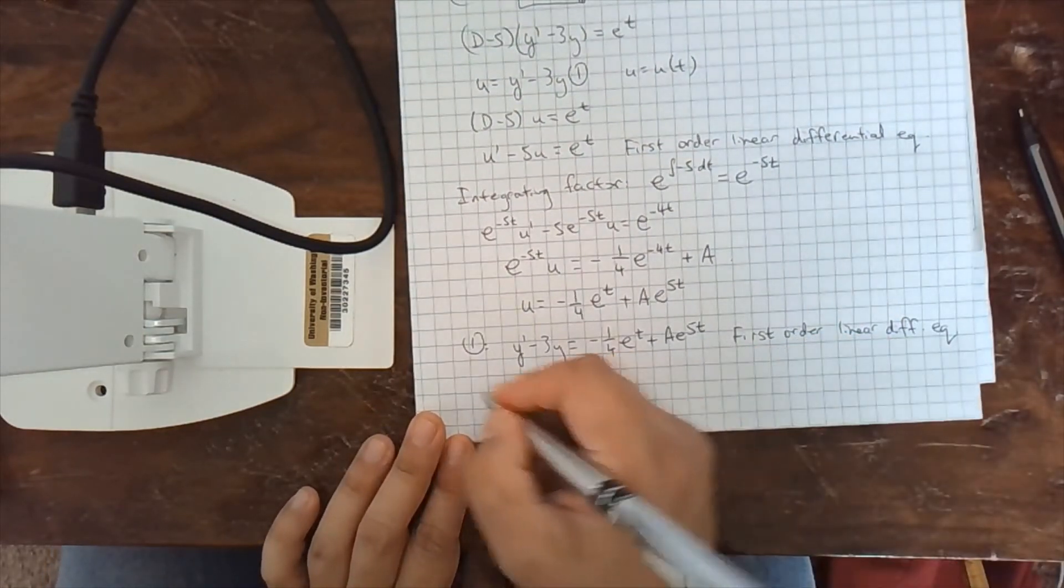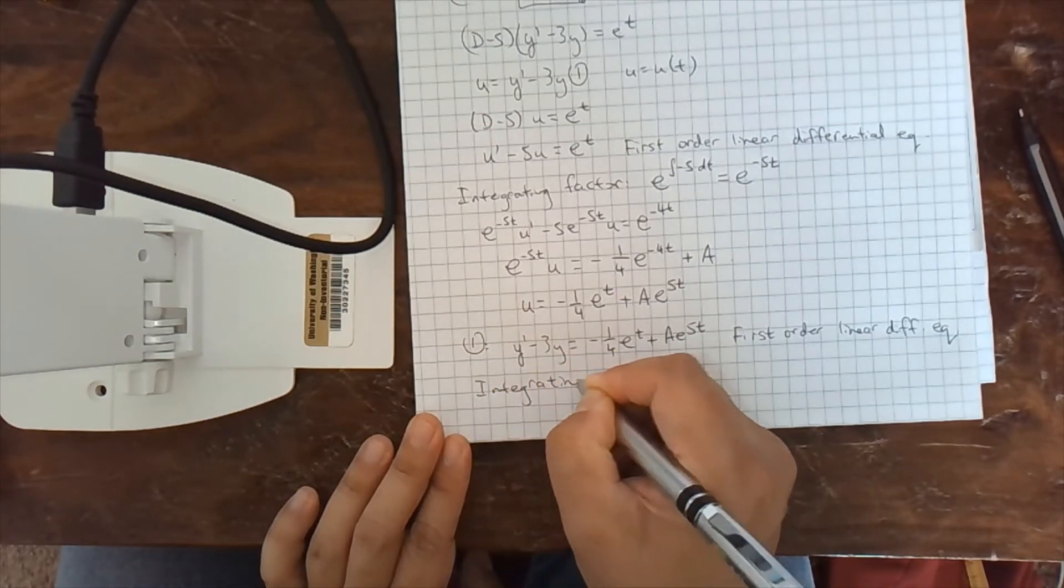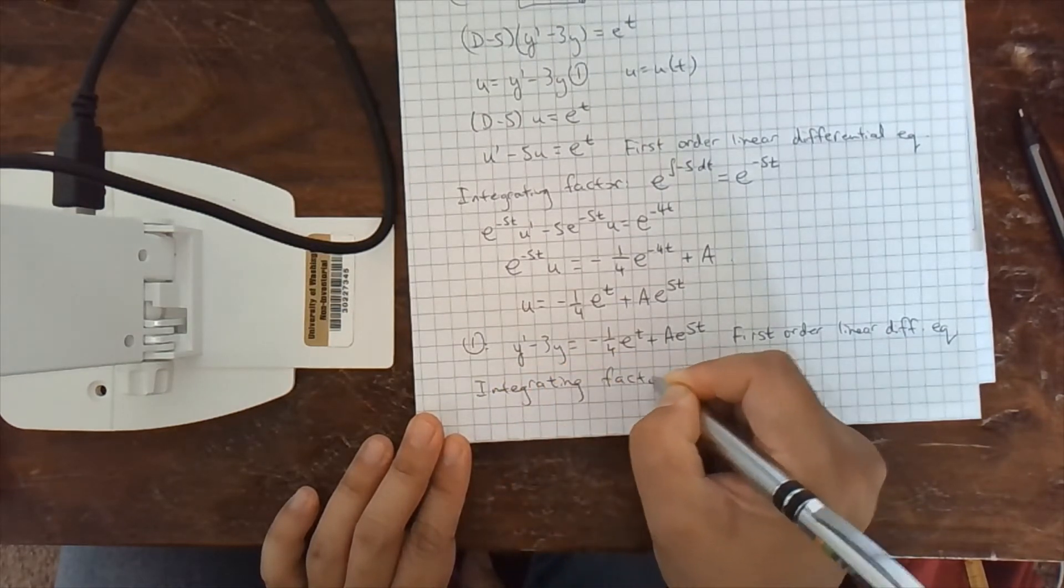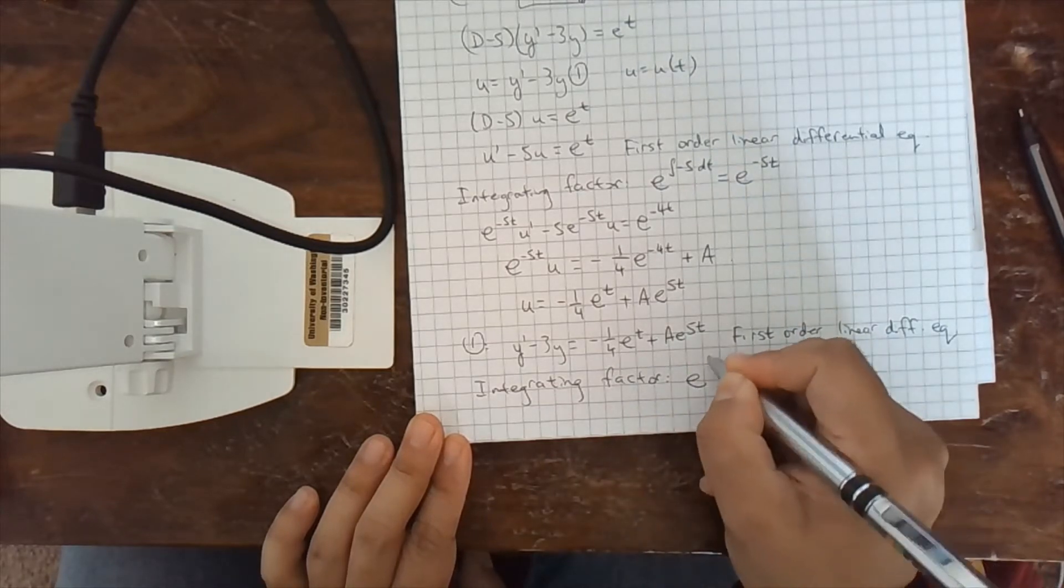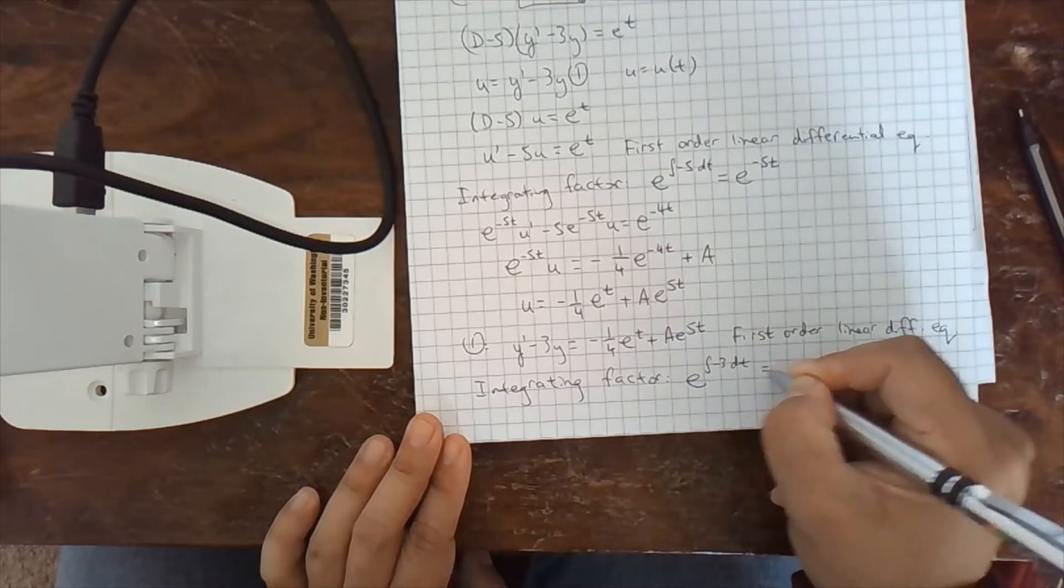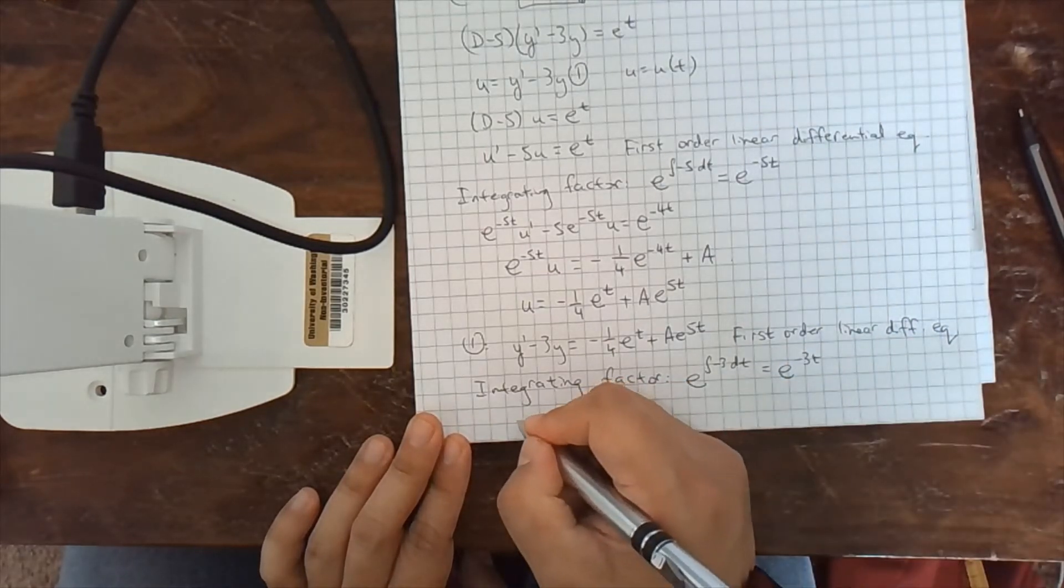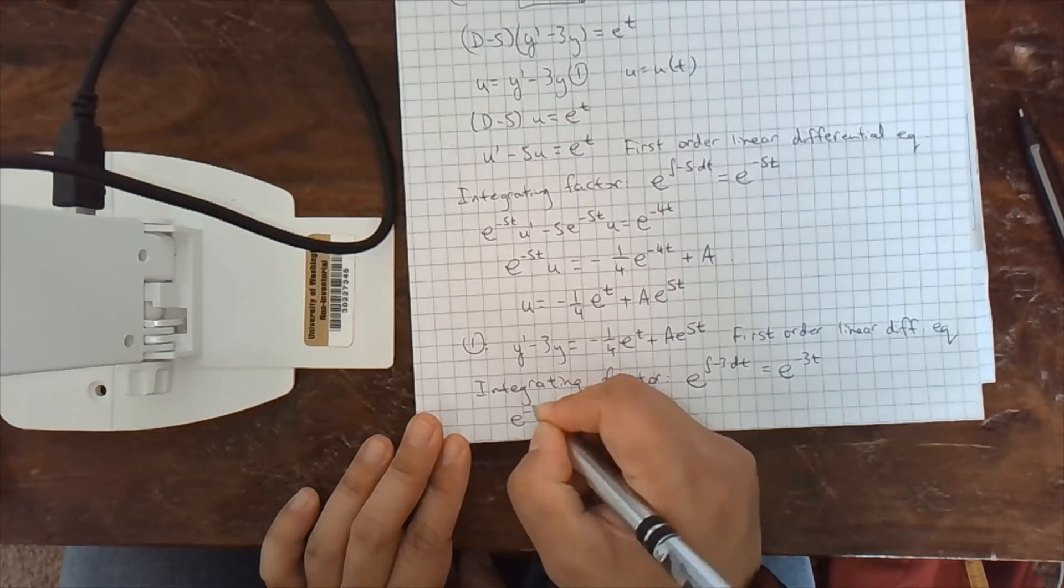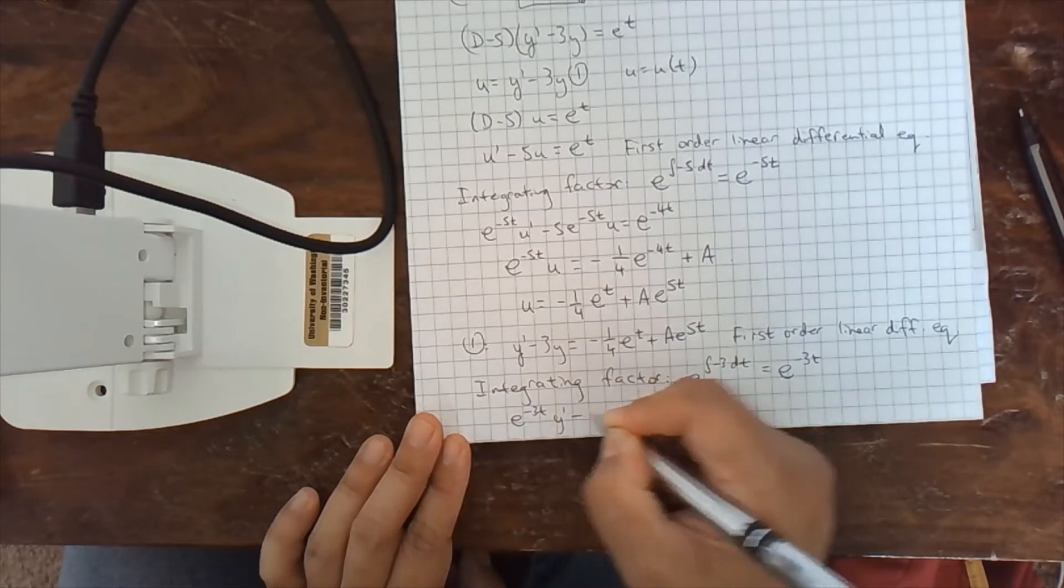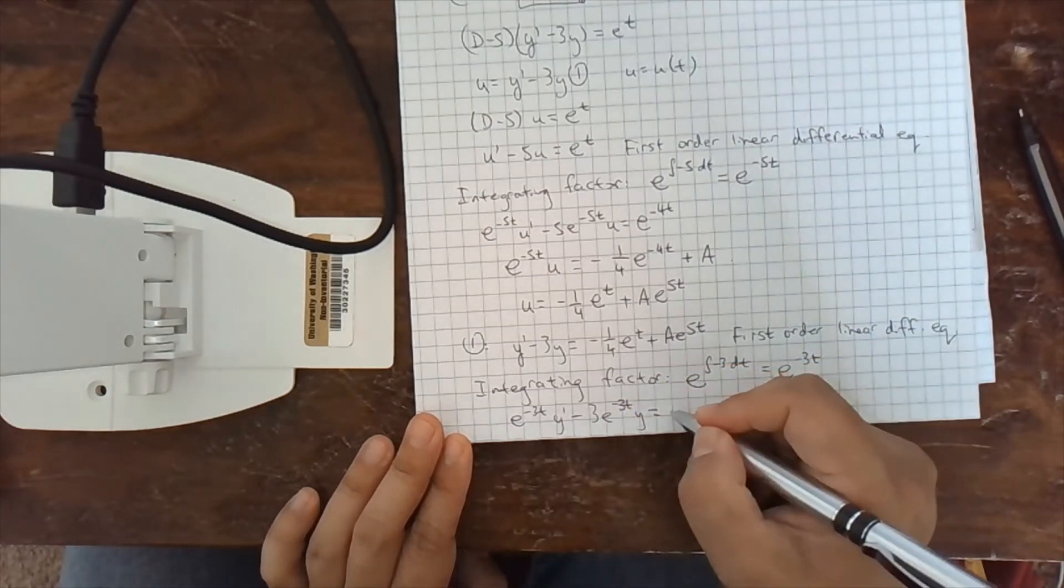Okay, so then I need another integrating factor. e to the integral of whatever's here, which is minus 3 dt, e to the minus 3t. I'm going to multiply both sides by e to the minus 3t. y prime minus 3 e to the minus 3t y. Be careful over here.